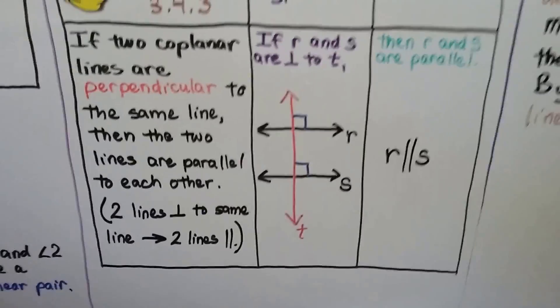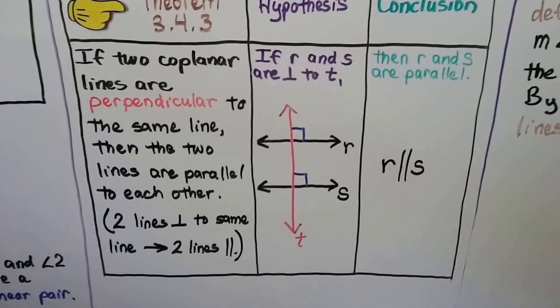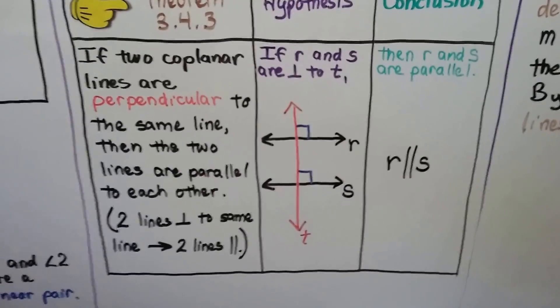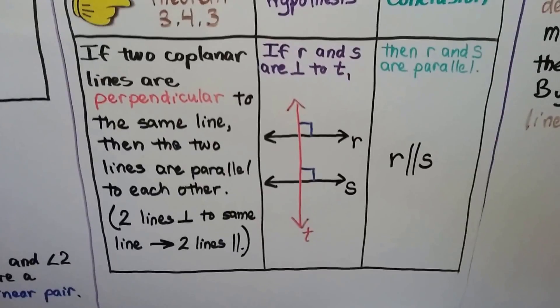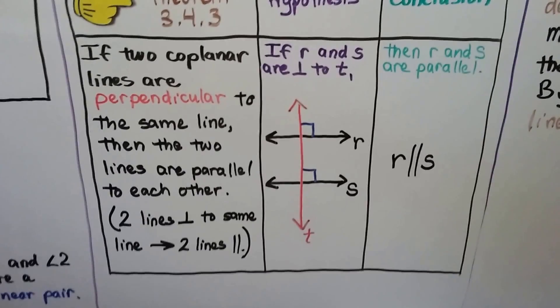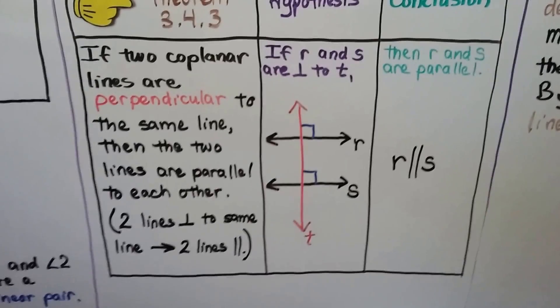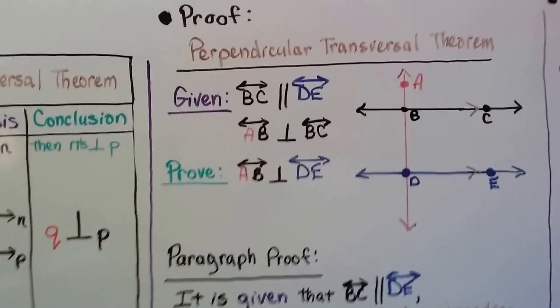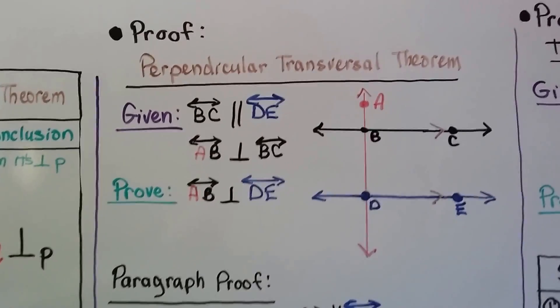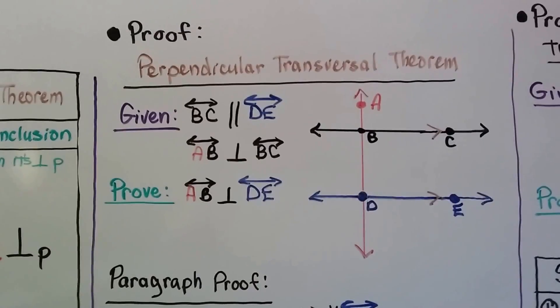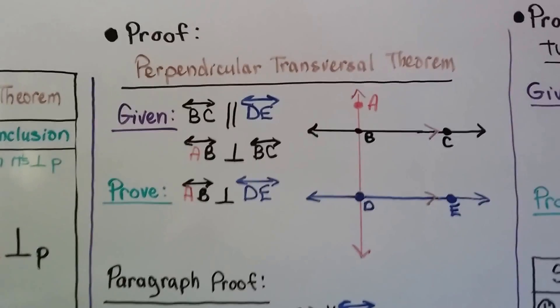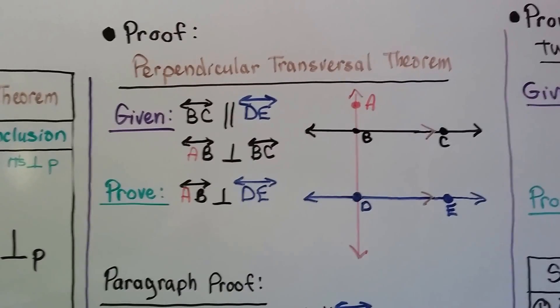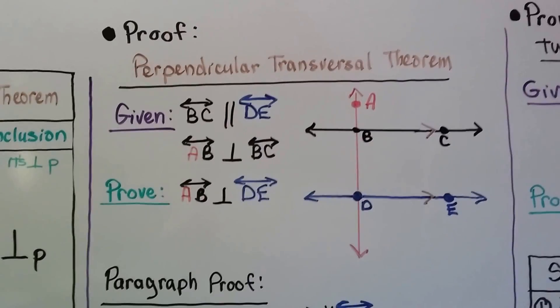It says if R and S are perpendicular to T, that red transversal, then R and S are parallel to each other. Now we can do a paragraph proof. This is the Perpendicular Transversal Theorem, and it's given that the black line BC is parallel to the blue line DE.